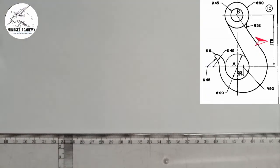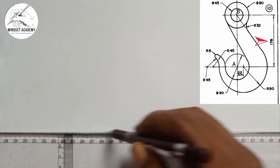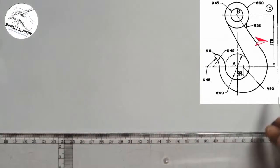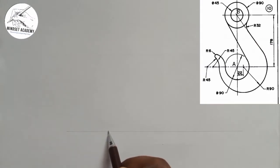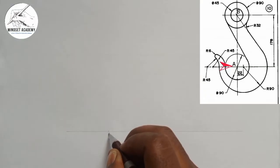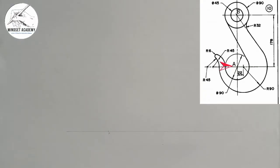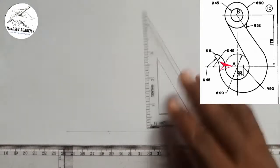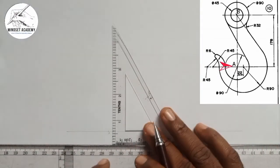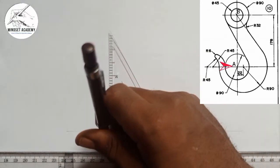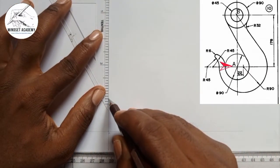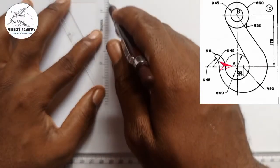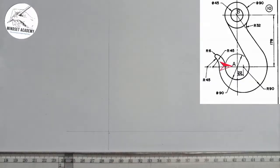So what I'm simply going to do is first draw a horizontal line. On that horizontal line I'm going to pick a point — that point will be my point A. On that point I'm going to place my set square and draw a vertical line using the faint line.